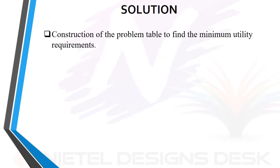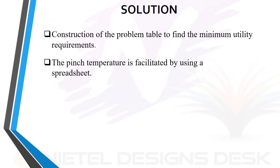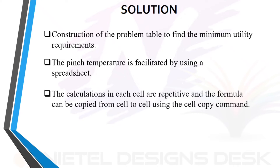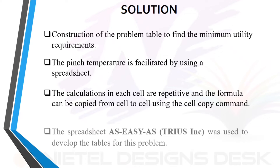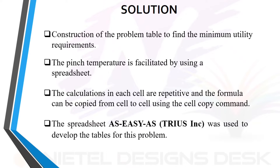We start with the construction of the problem table to find the minimum utility requirement. The pinch temperature is facilitated by using a spreadsheet. The calculations in each cell are repetitive and the formula can be copied from cell to cell using the cell copy command. The spreadsheet EasyTriusInc was used to develop the tables for this problem.